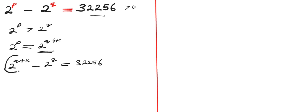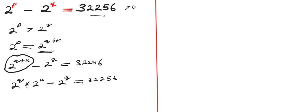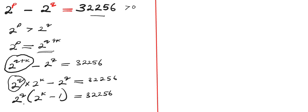If we now apply the law of exponents, we are going to have 2 to the power of q times 2 to the power of k, minus 2 to the power of q, equals 32,256. Because the bases here are equal, if you add the powers you get back this. The next step is to factorize: if we take out 2 to the power of q, we get 2 to the power of q into 2 to the power of k minus 1, equals 32,256.